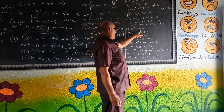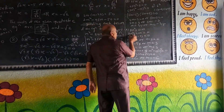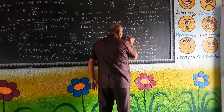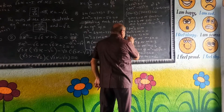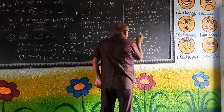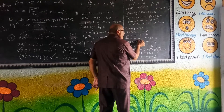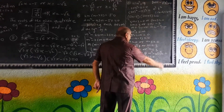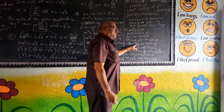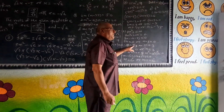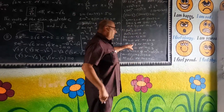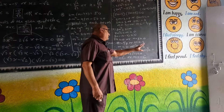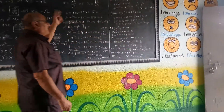Next, example 11: 7m squared minus 21m equals 0. Taking 7m common: 7m into m minus 3 equals 0. Therefore m equals 0 divided by 7, which equals 0, or m equals 3. So m equals 0 or m equals 3 are the roots of the given quadratic equation.